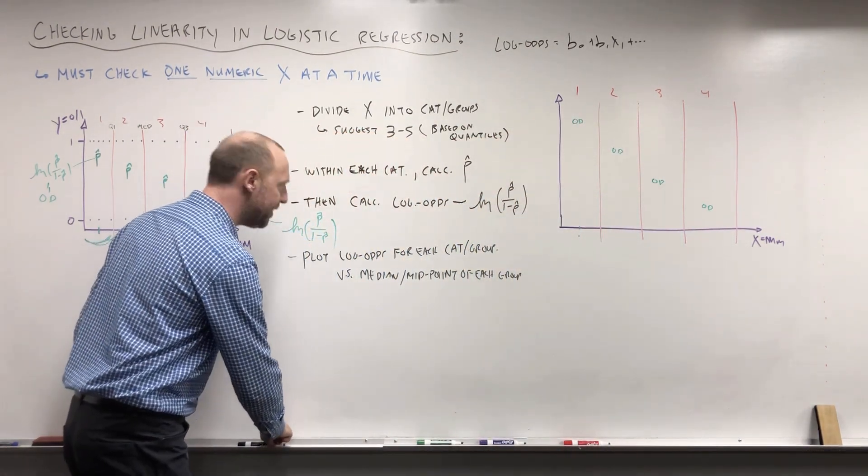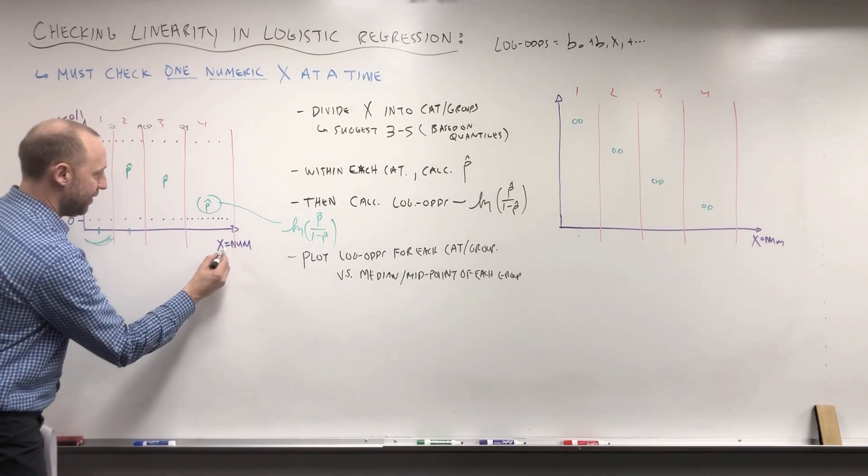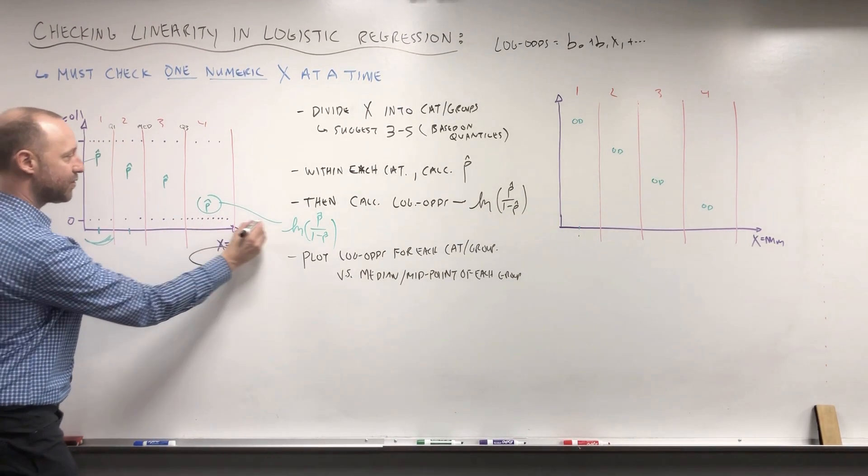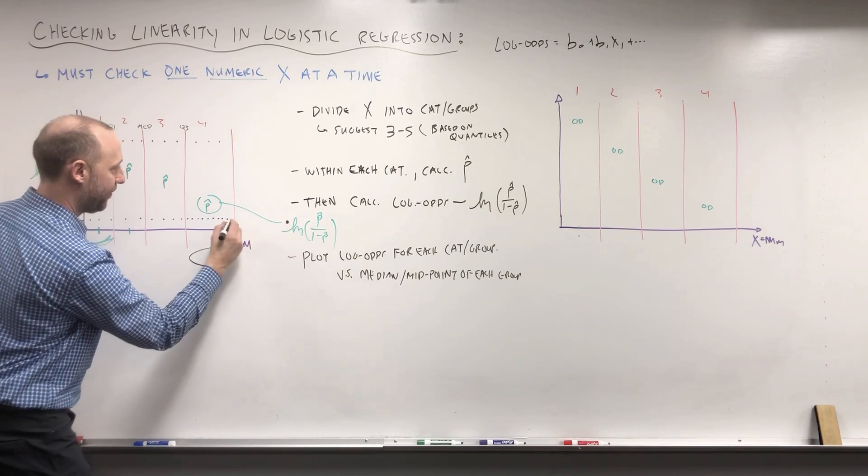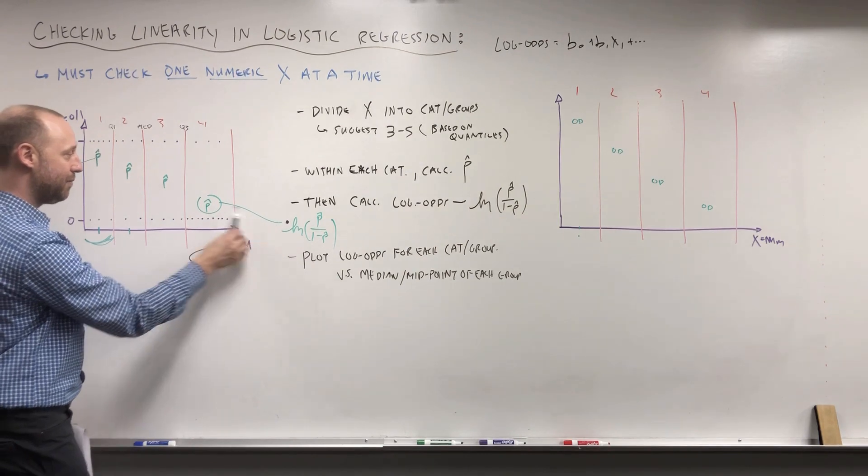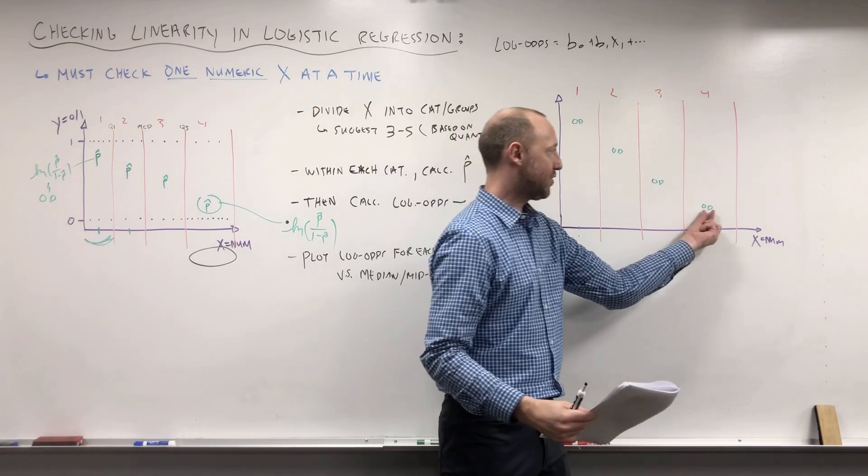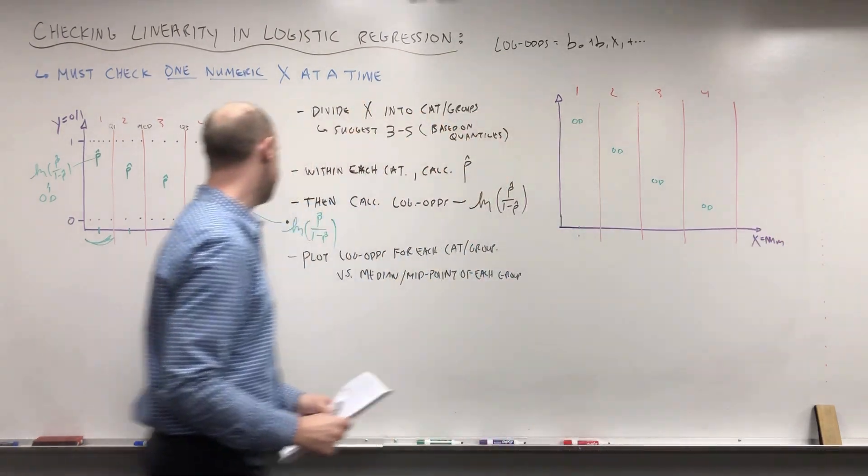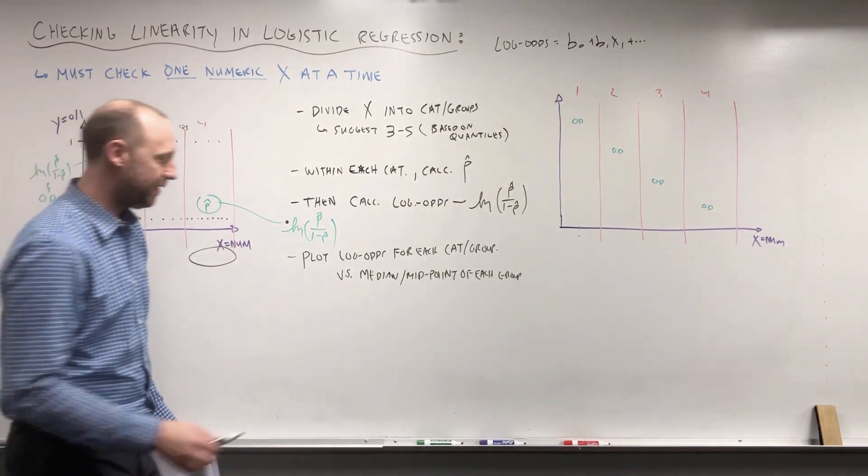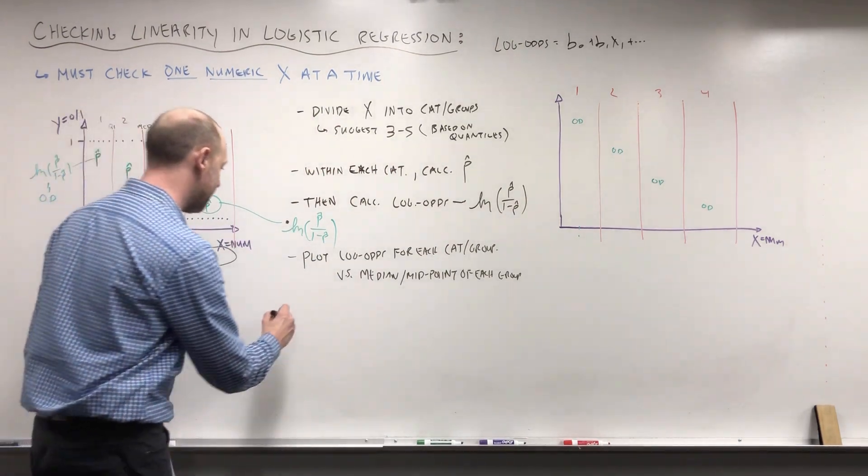Now the reason I'm suggesting for these using the median rather than the midpoint is just suppose that here's the values of x, there's one person sitting way out here, there's one more person at a really high x value. What that's going to do, if you take the midpoint, it might pull the midpoint a little bit higher and it might stretch this a bit further over. So I think it's a little bit safer to use the medians of all the x values within each of these groups, but it's not going to be a big difference either way.